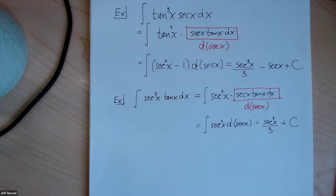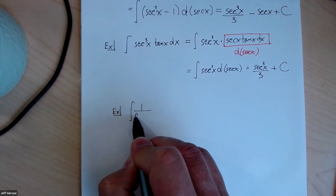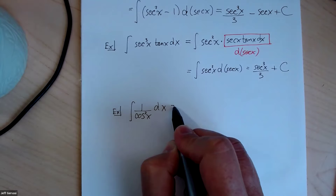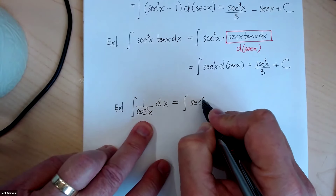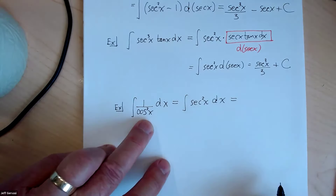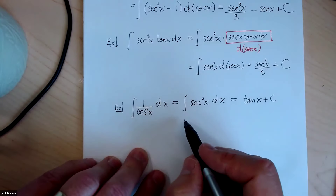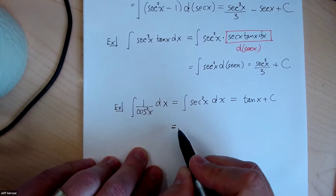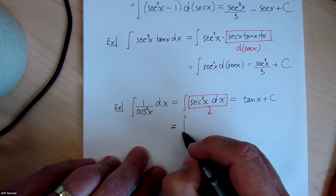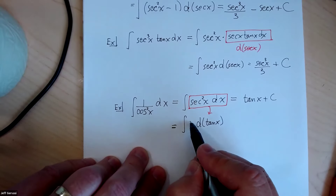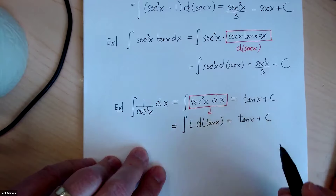Occasionally, integrals are in disguise. Suppose you had one over cosine squared — remember from trigonometry, one over cosine squared is the secant squared. So we can go right to the answer: this is equal to the tangent of x plus C. Since we're talking about using differentials, this whole expression can be rewritten as the integral of the differential of the tangent of x. The integrand is just one, and the antiderivative of one d(tangent of x) is equal to tangent of x. It's a clever way to look at it.